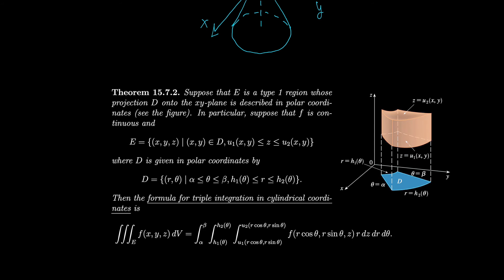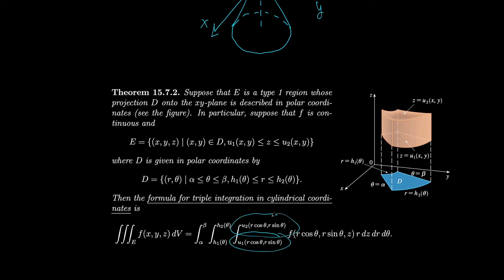Now that we have cylindrical coordinates, let's talk about integrating with them. For a type 1 region, we first integrate with respect to z between two functions of x and y, then treat the domain D in the xy-plane as a polar region. So instead of dz dy dx, we use dz dr dθ, converting x and y to r cosθ and r sinθ as before, with z limits as functions of r and θ.